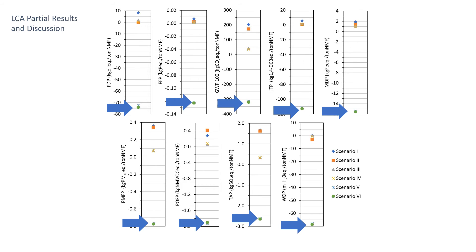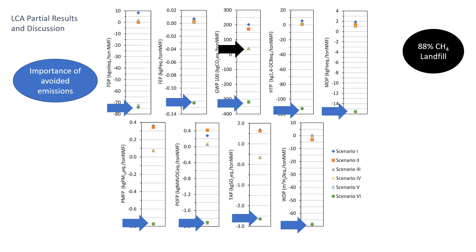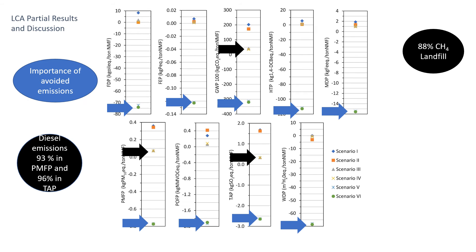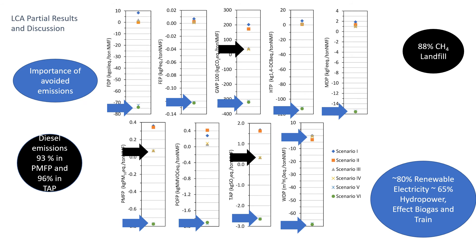The results show that scenarios 5 and 6 have the best performance in all impact categories assessed, highlighting the importance of avoided emissions. In global warming potential, scenarios 3 and 4 also have a good performance due to avoided emissions at landfill. In particulate matter formation potential and terrestrial acidification potential, scenarios 3 and 4 also perform well, due to avoided diesel emissions from the improved transportation system. In water depletion potential, scenarios 3 and 4 show a worse performance than scenario 2, due to the special characteristic of Brazilian electricity derived mainly from hydropower plants.